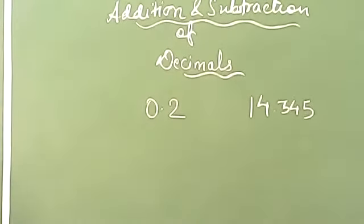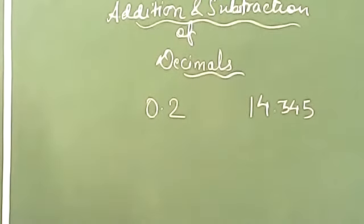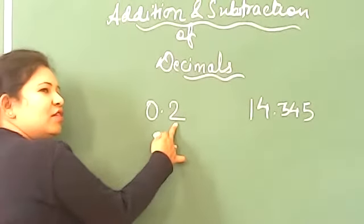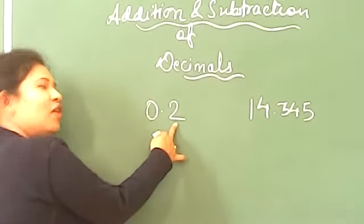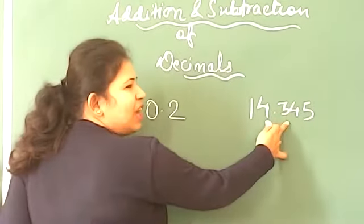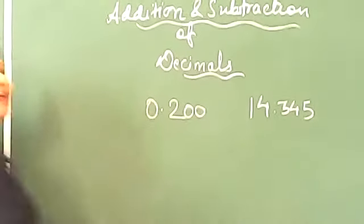So remember when we talk about like decimal, after decimal you should have same number of digits. Same number of digits means what? After decimal how many digits? Only one. After decimal how many digits? Three. So you can add two more zeros here. Now it will become like decimal.